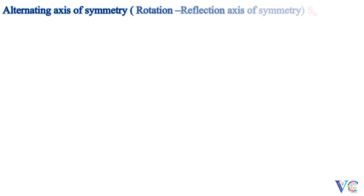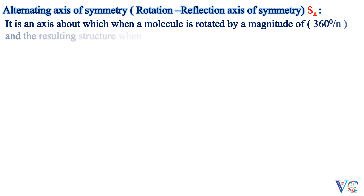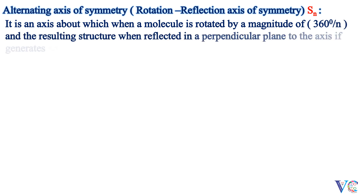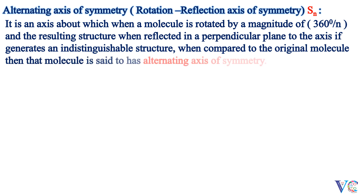Alternating axis of symmetry, or rotation-reflection axis of symmetry — it is an axis about which, when a molecule is rotated by a magnitude of 360 degrees divided by n, and the resulting structure when reflected in a plane perpendicular to the axis generates an indistinguishable structure when compared to the original molecule, then that molecule is said to have an alternating axis of symmetry.